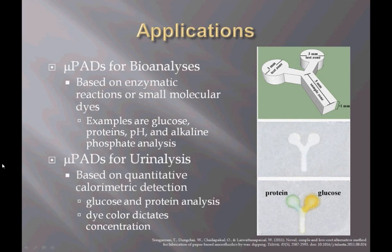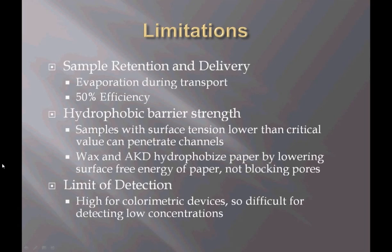Applications of micropads are currently very limited as they are still a fairly new concept. The first micropad design was for bioanalysis based on enzymatic reactions of small molecular dyes, with the most well-known example being litmus paper for estimating pH. Some micropads are starting to be used in urine analysis based on quantitative colorimetric detection. Limitations include sample retention and delivery — the volume reaching the detection zone is much smaller than the total volume in the device — and evaporation during transport leaves only 50% efficiency. Hydrophobic barrier strength is also a limitation, as samples with lower surface tension than the critical value can cause channel penetration, leading to reduced volume tested or cross-contamination. Micropads also require fairly high concentrations to properly analyze.